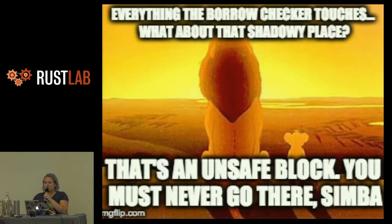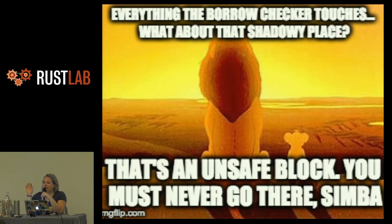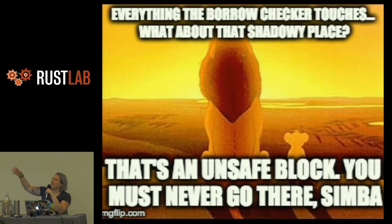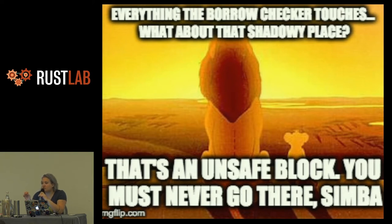Sometimes our ownership rules can be too restrictive, so we do have an escape keyword — unsafe — that allows you to relax some of Rust's guarantees. By encapsulating unsafe code into blocks, we can isolate the source of memory bugs and create safe abstractions that appropriately check that we've upheld Rust's safety guarantees. Unsafe code is not completely lawless — it just asks that you, the programmer, verify conditions that the compiler can no longer reason about.